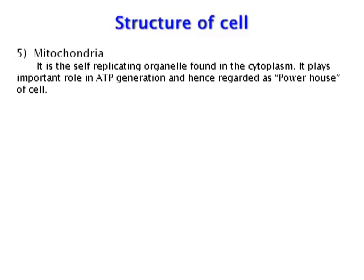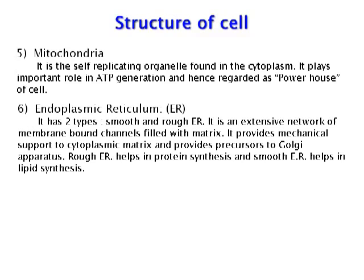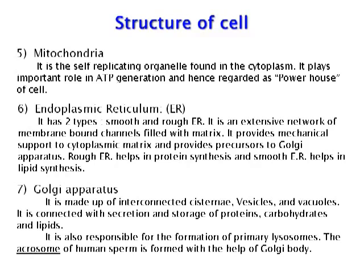Mitochondria is the self-replicating organelle found in the cytoplasm; it plays an important role in ATP generation and hence is regarded as the powerhouse of the cell. Endoplasmic reticulum has two types: smooth and rough ER. It is an extensive network of membrane-bound channels filled with matrix, provides mechanical support to the cytoplasmic matrix, and provides precursors to the Golgi apparatus. Rough ER helps in protein synthesis while smooth ER helps in lipid synthesis. Golgi apparatus is made up of interconnected cisternae, vesicles, and vacuoles, and is connected with secretion and storage of proteins, carbohydrates, and lipids. It is also responsible for the formation of primary lysosomes.